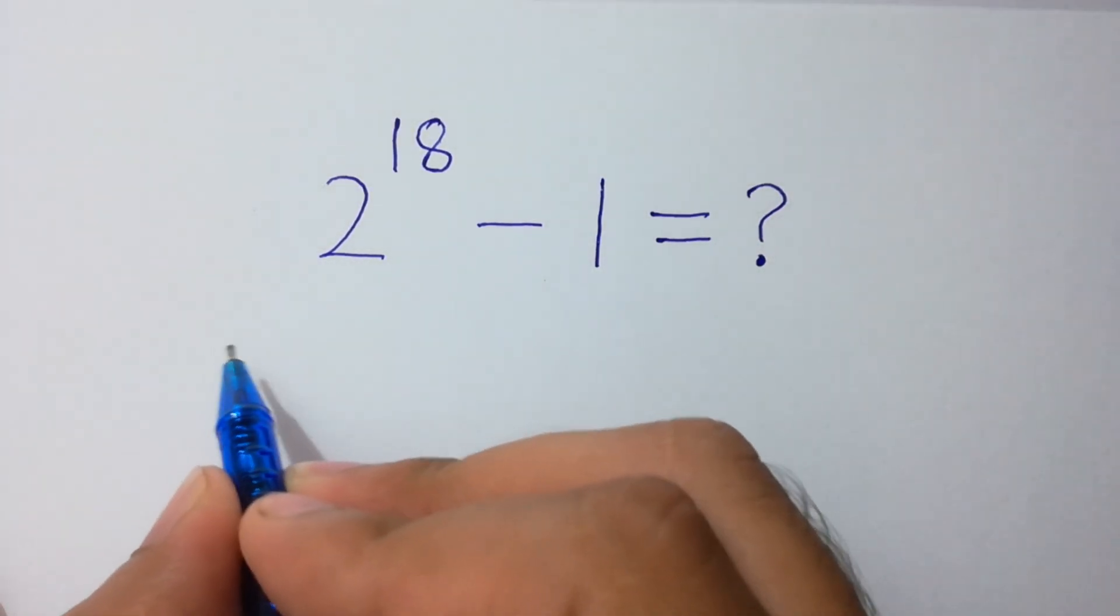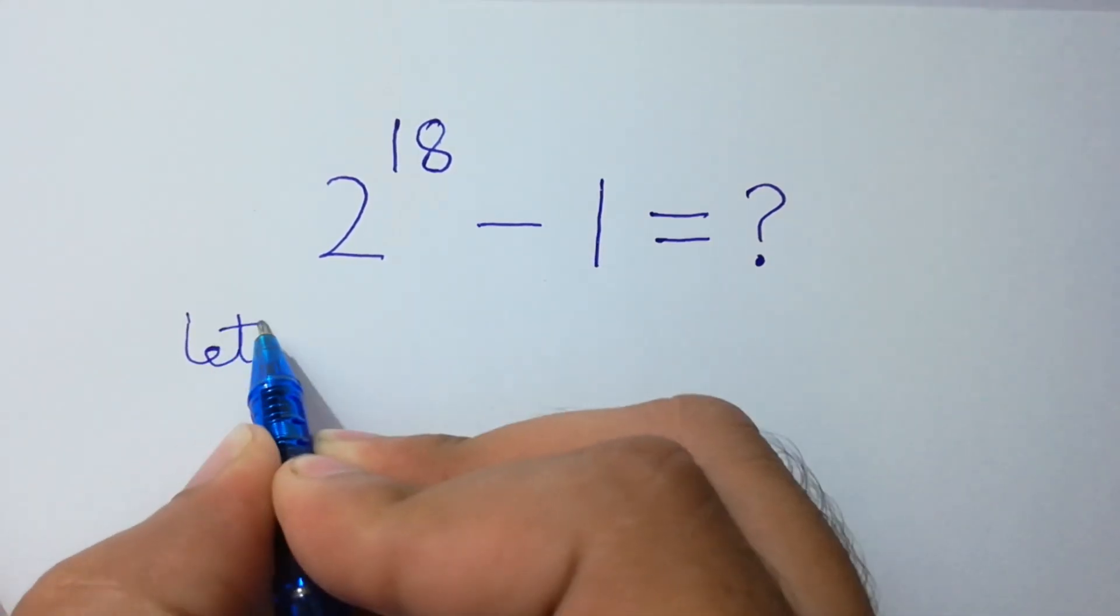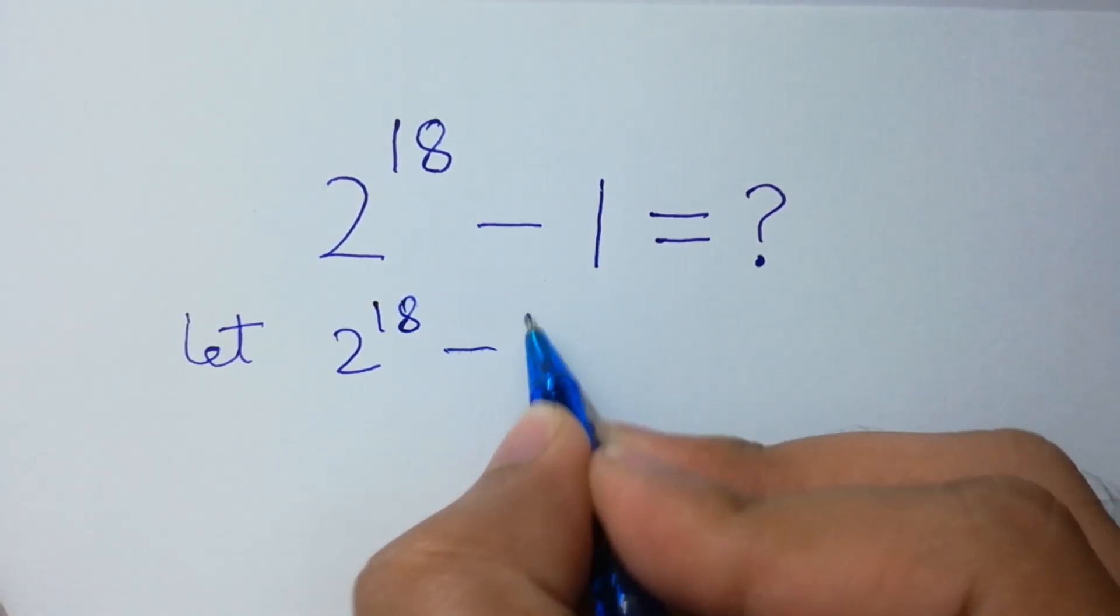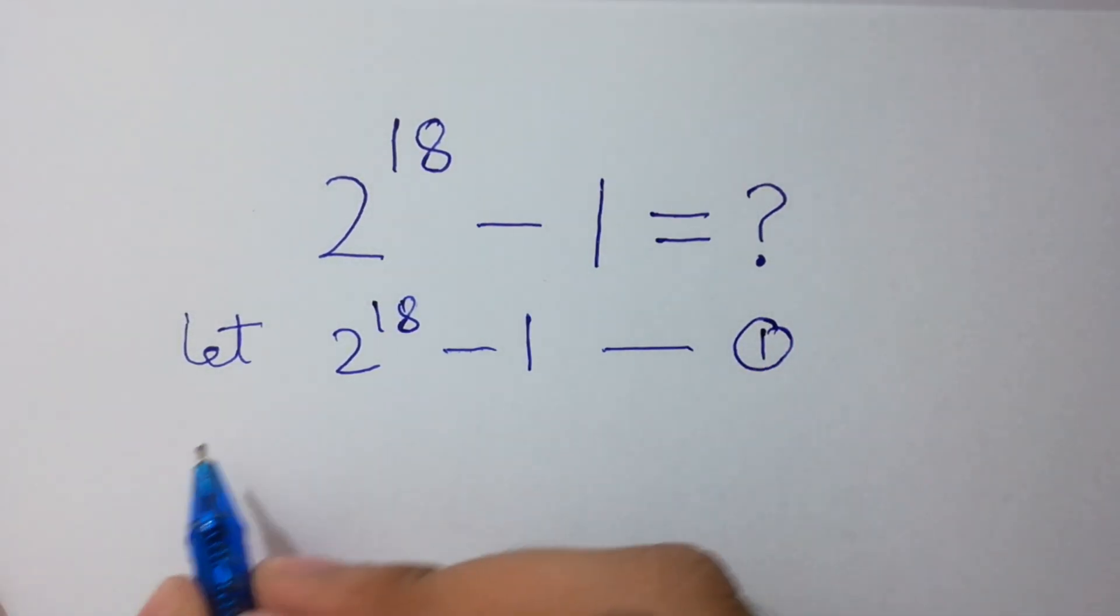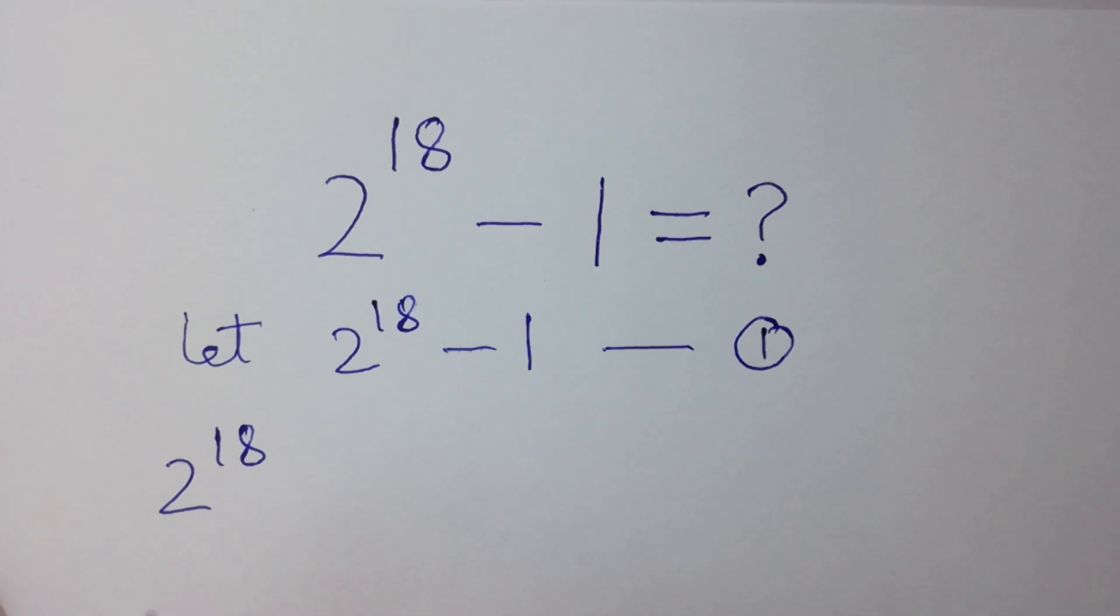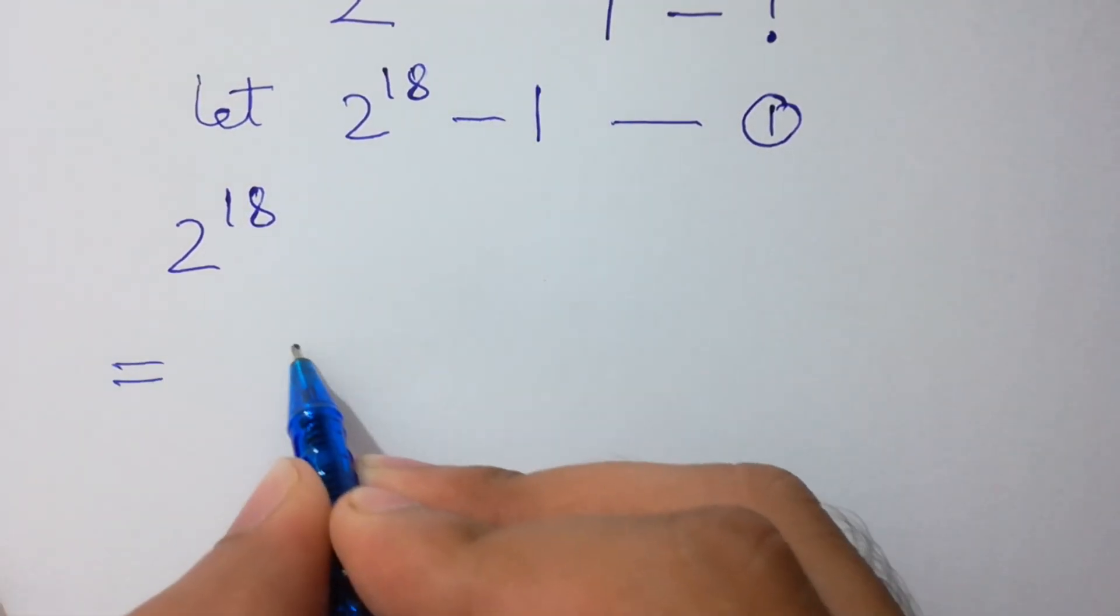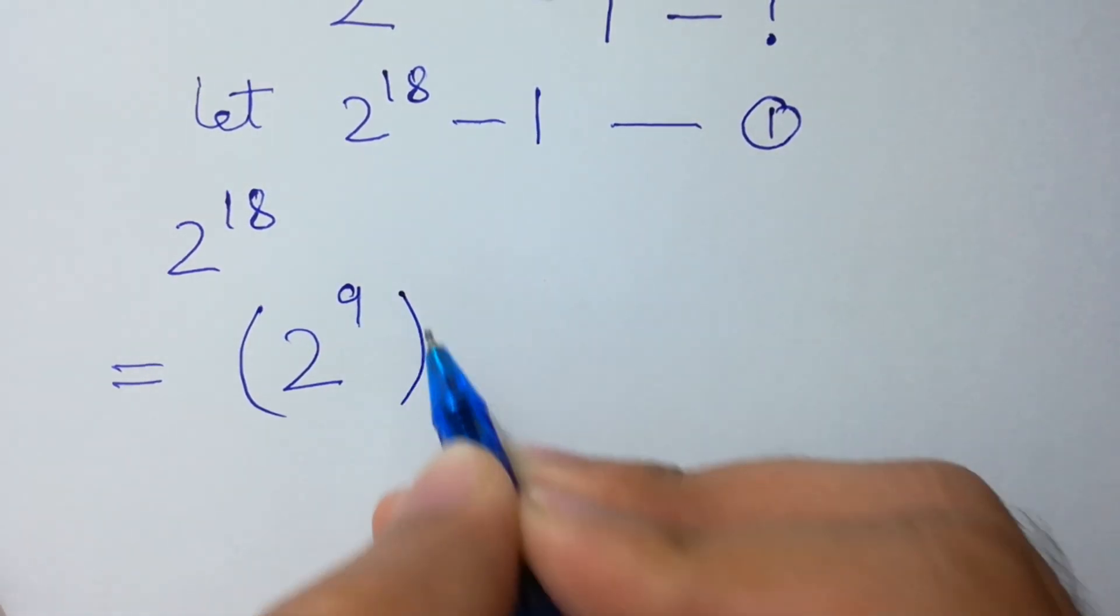Let's suppose that 2 to the power 18 minus 1 is our first equation. First of all, take 2 to the power 18, which is equal to 2 to the power 9, the whole squared.